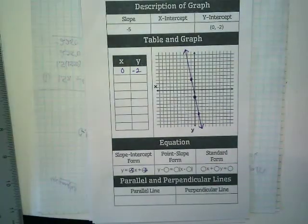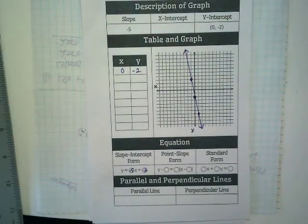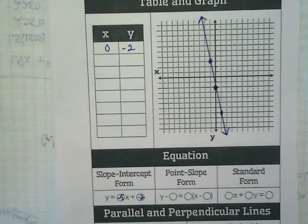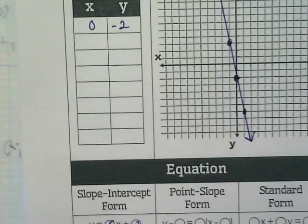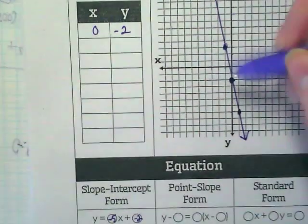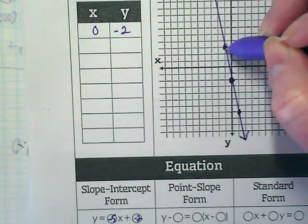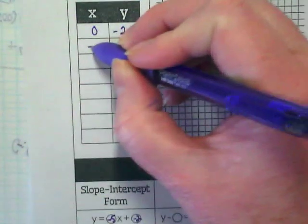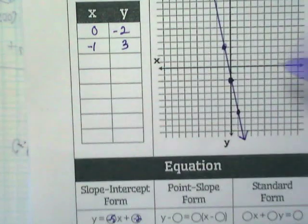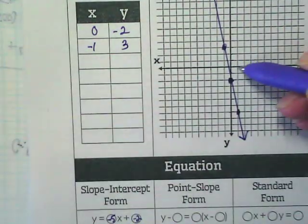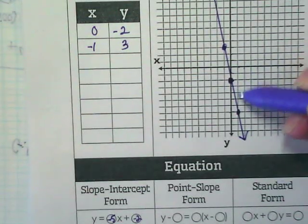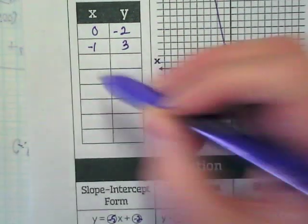Do you notice what happened when I graphed that? I found two other points, didn't I? I'm going to zoom in so we can get those points. This is negative 1, 1, 2, 3. And 1, 2, 3, 4, 5, 6, 7.